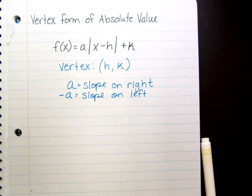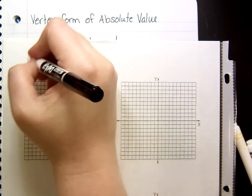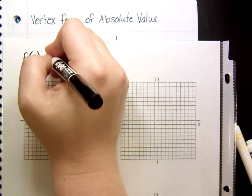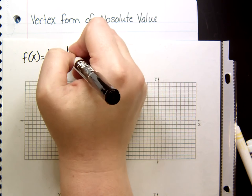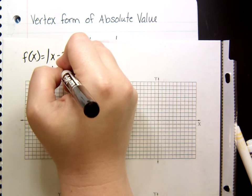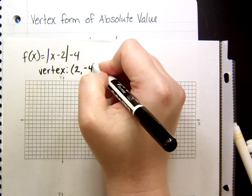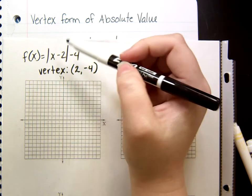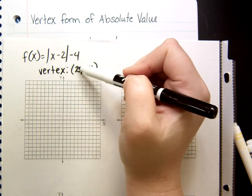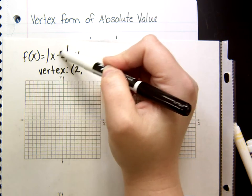So, let's take a look at an example, or several. So, let's take this. f of x equals absolute value of x minus 2 minus 4. The vertex of this absolute value is the point positive 2, negative 4. For the x value of your vertex, you always take the number inside and basically change the sign. So, instead of negative 2, it's actually positive 2.